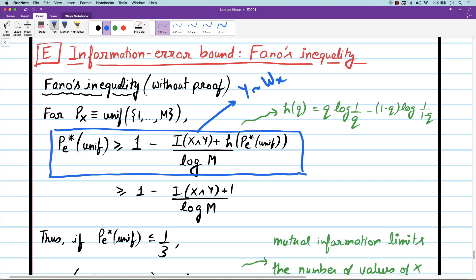It is at least 1 minus something. As long as this something is not, when this guy here, this term here, when it comes close to 1, then you can make p_e star to 0. But as long as this thing is smaller than 1, this probability of error cannot be made small. What is this thing? This is the mutual information by log of number of hypotheses.